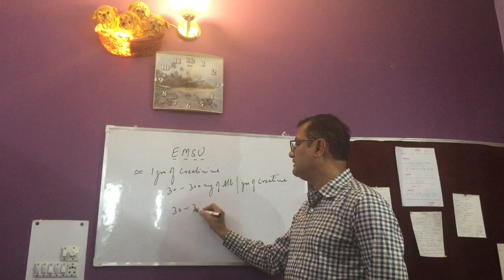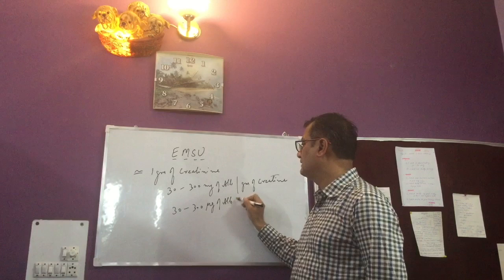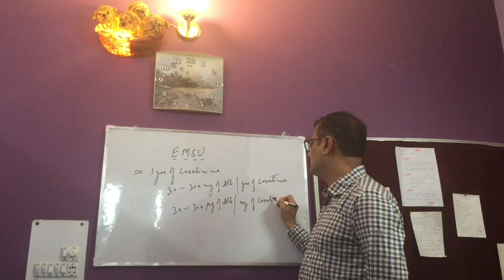And again, we can solve this equation. 30 to 300, if I want to use microgram here of albumin, then here I can write per milligrams of creatinine.